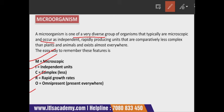Microorganisms are a very diverse group — they have different physical and chemical characteristics. They occur almost everywhere and do not depend on anyone; they are independent. They multiply very fast, which is why they are found in such large numbers. As compared to plants and animals, they are relatively less complex, yet they exist almost everywhere on earth.